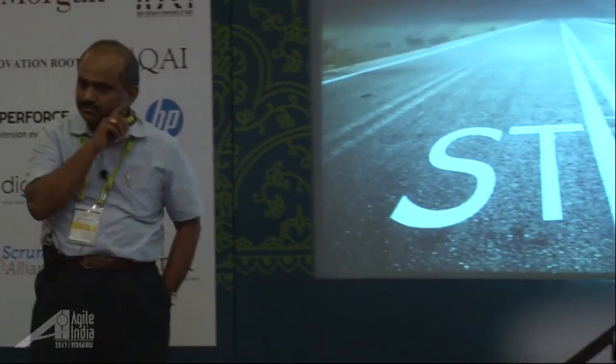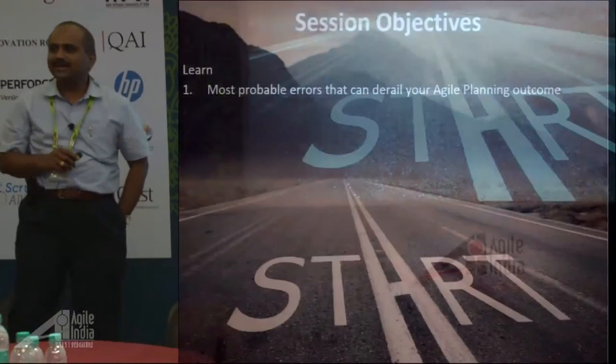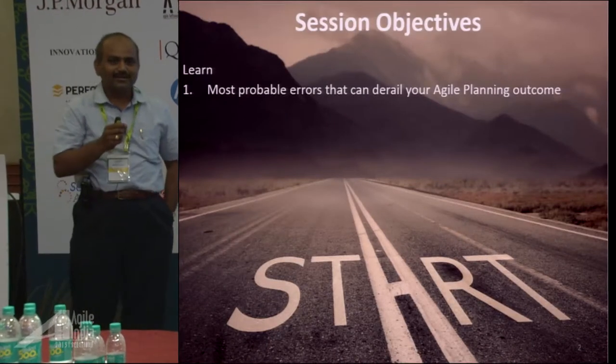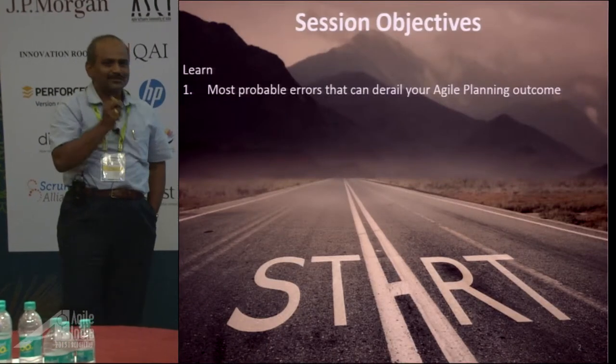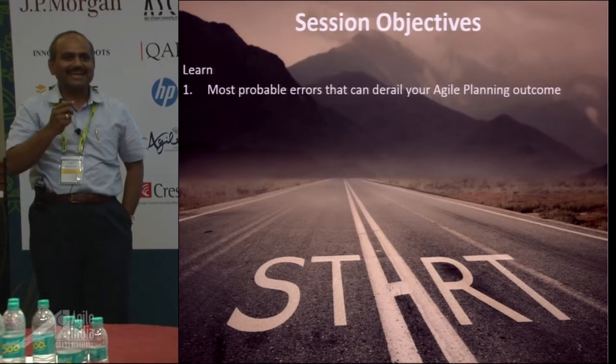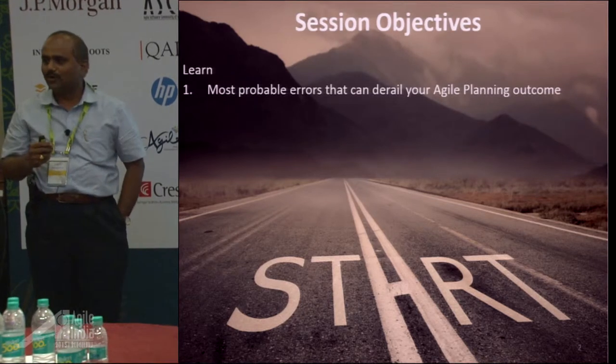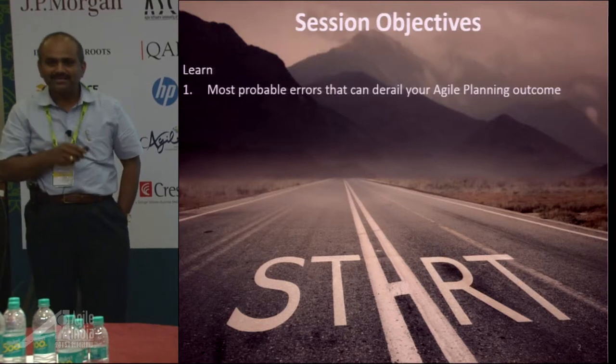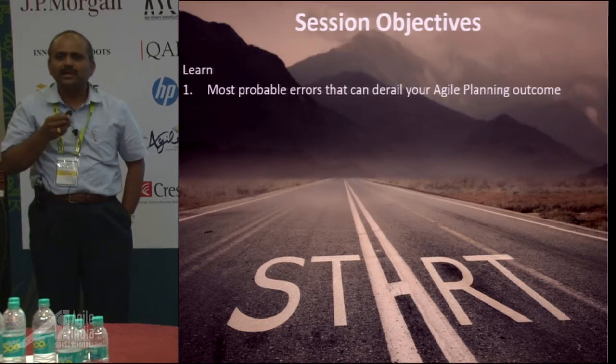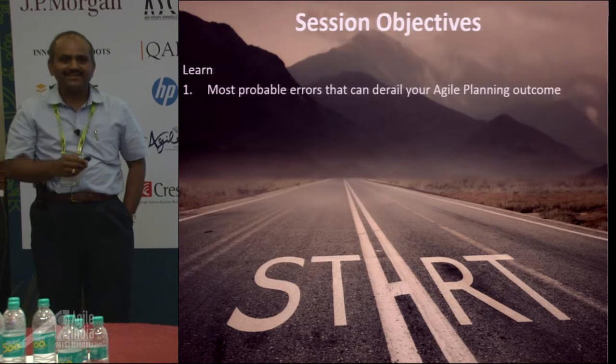Okay, with this, welcome to this session. What are the session objectives? First thing is: what are the most probable errors that can derail your Agile planning outcome? Agile planning happens at six different levels, and if you mess up with one planning event, it can have a cascading impact on other planning events.